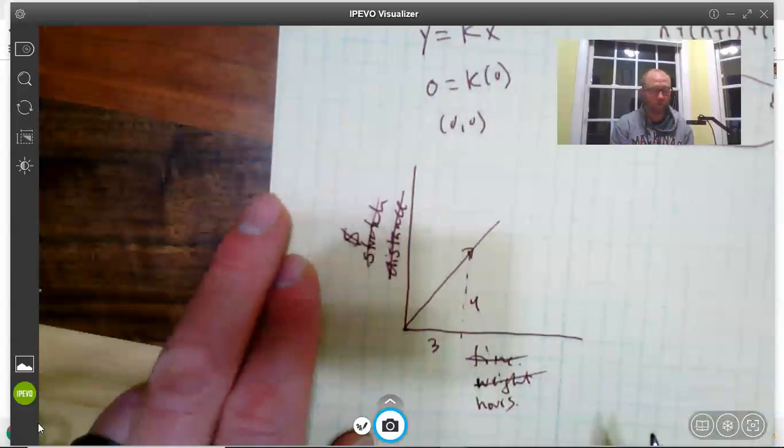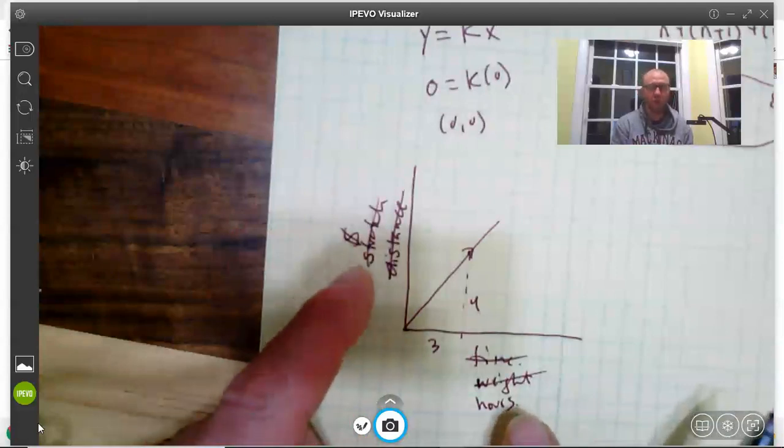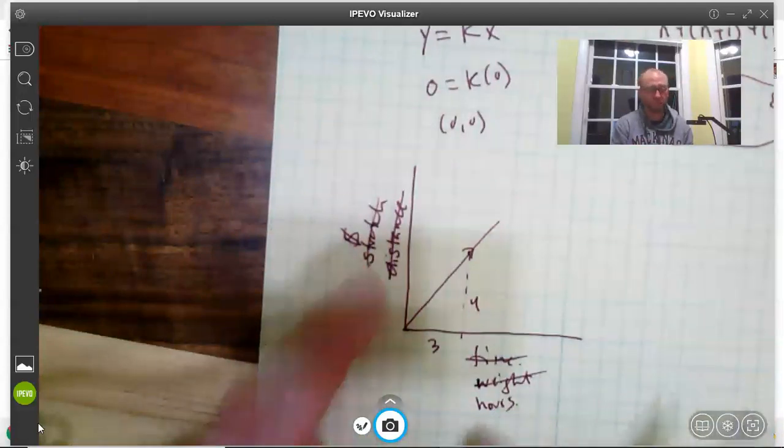It could be something about money, it could be dollars per hour, maybe you're getting paid for something, right? Whatever it is, whatever you're measuring on the y-axis, whatever you're measuring on the x-axis, it's change in y per change in x, per unit of change in x.